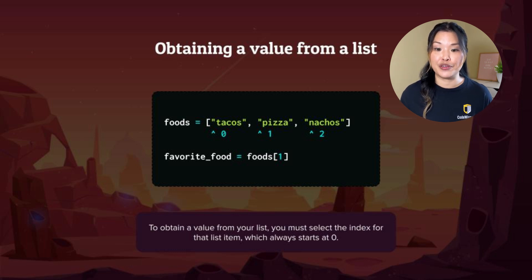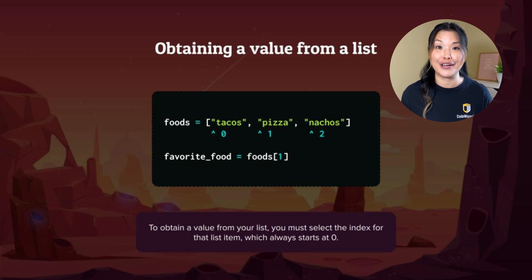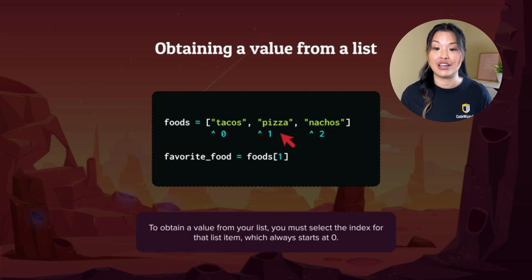Let's say from this list of foods — taco, pizza, and nachos — you only want your favorite food, which happens to be foods at index one. We say our variable favorite_food is equal to the list foods at index number one. So foods[1] — which food would that be? Foods[1] is going to be pizza, because our index one is pizza. And if we said foods[0], that would be tacos.